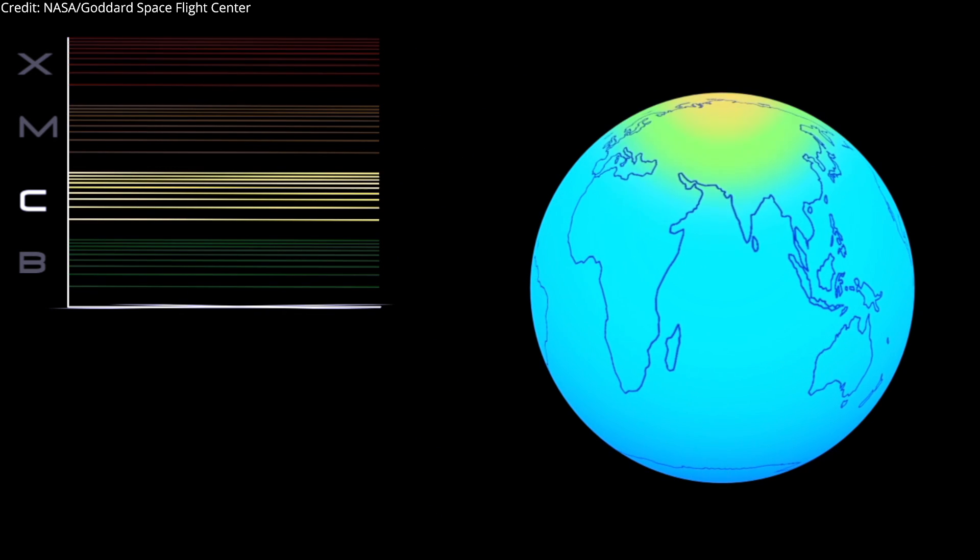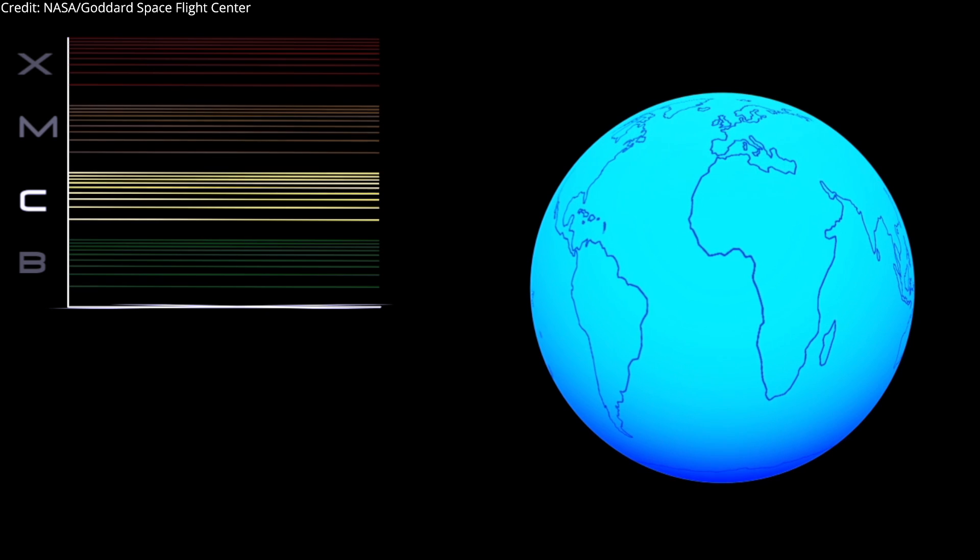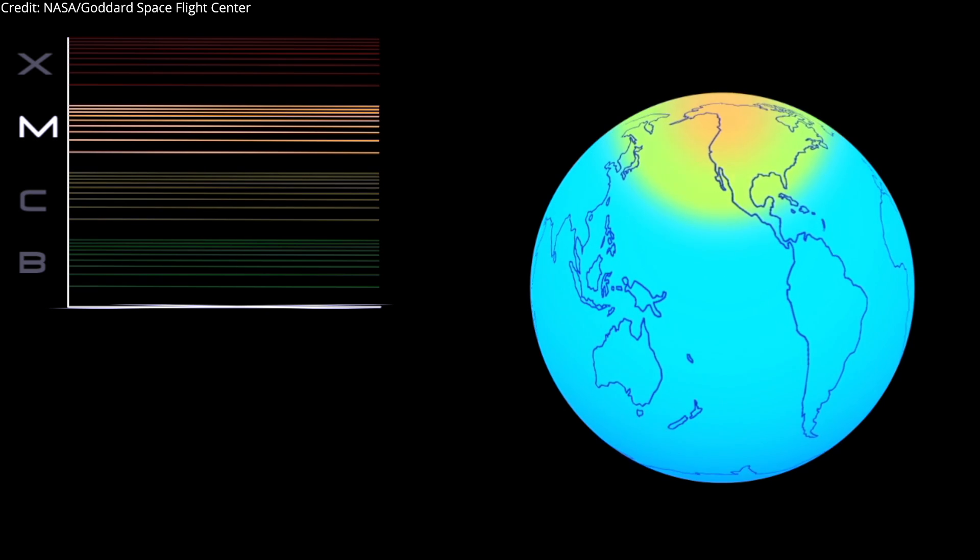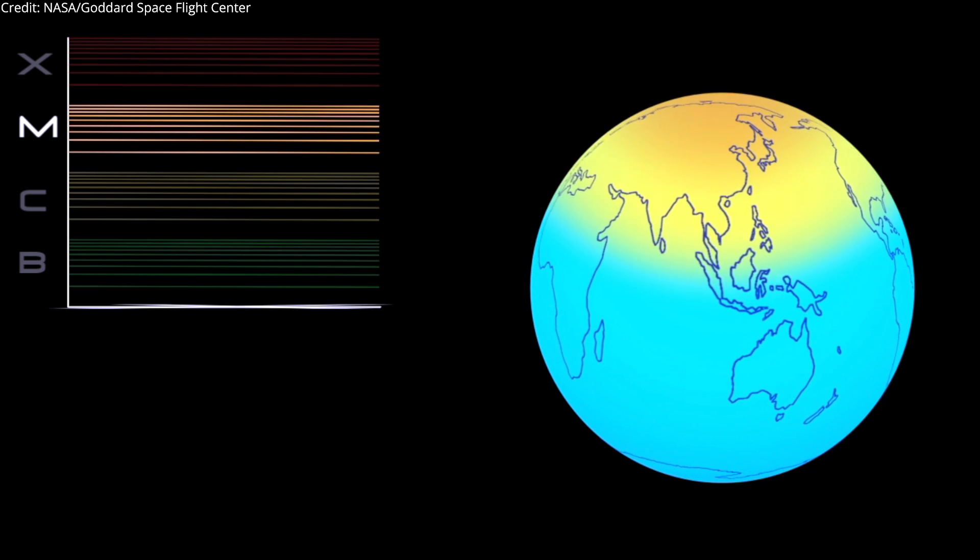C-class flares are too weak to noticeably affect Earth. M-class flares can cause brief radio blackouts at the poles, and minor radiation storms that might endanger astronauts.